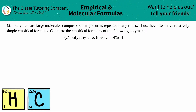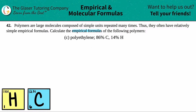Number 42. Polymers are large molecules composed of simple units repeated many times. Thus, they often have relatively simple empirical formulas. Calculate the empirical formulas of the following polymers — letter C. In this case, we have to find the empirical formula for polyethylene, which is 86% carbon and 14% hydrogen.